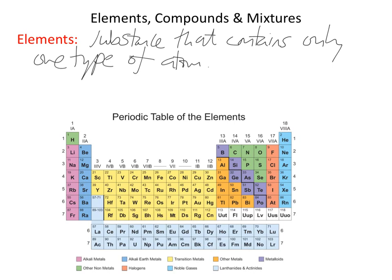You should definitely know at least the first 20 elements, so that's all the way up to calcium — hydrogen, helium, the second row, the third row, and then potassium and calcium. You should also know a few others: copper is Cu, zinc is Zn, silver is Ag, and gold is Au. Every element has been given a symbol — sometimes just one capital letter, and sometimes two letters where the first is a capital and the second is lowercase.